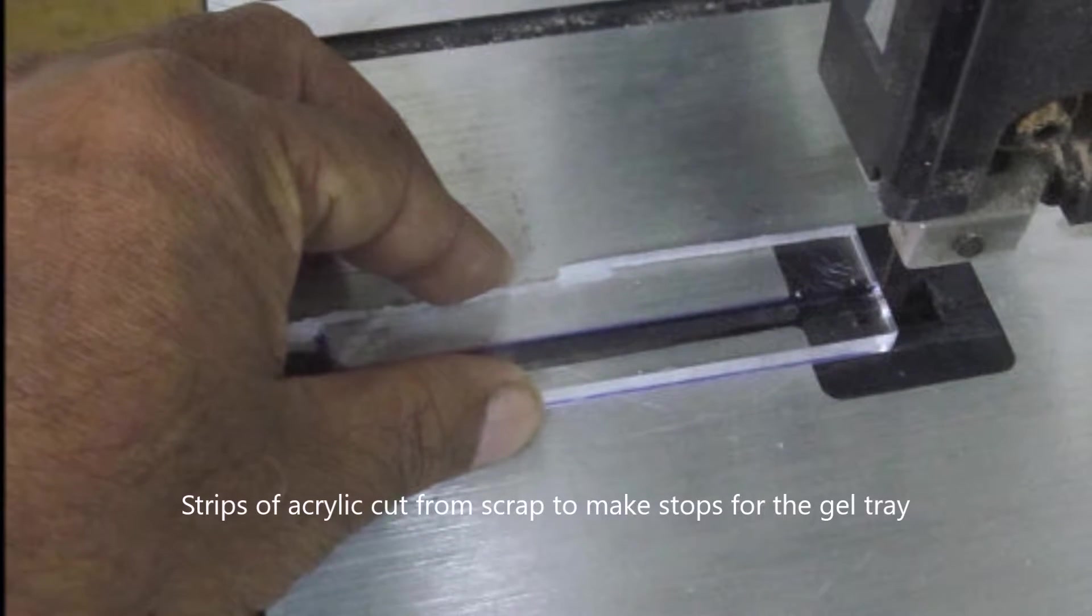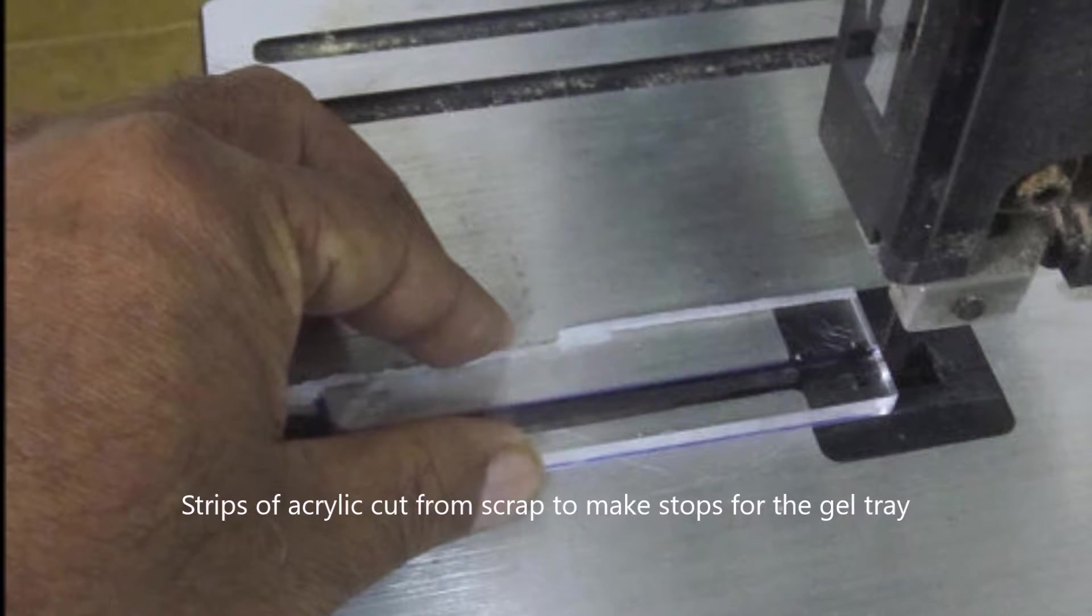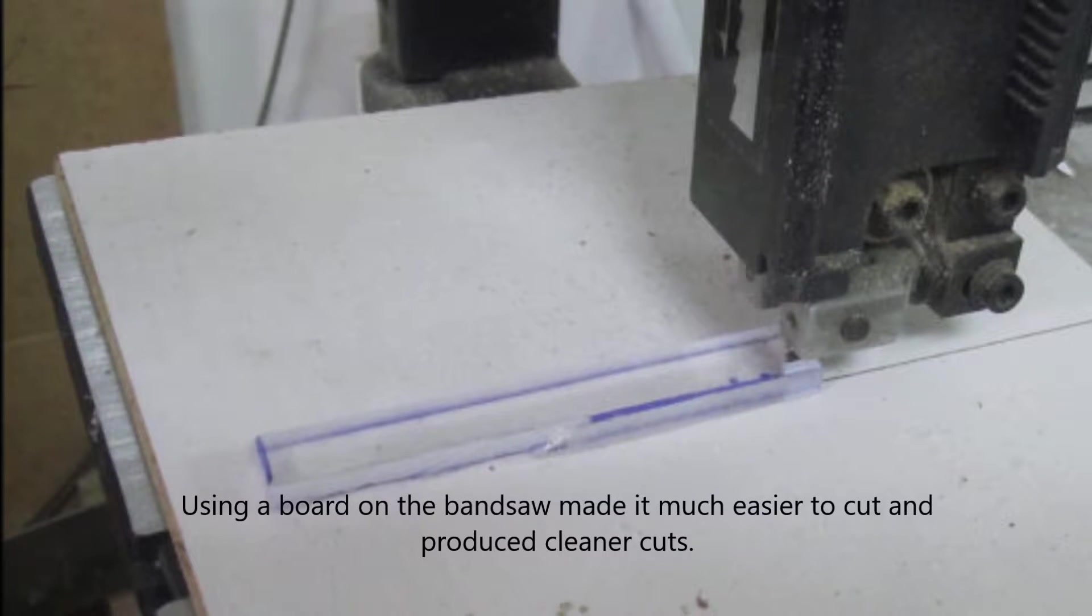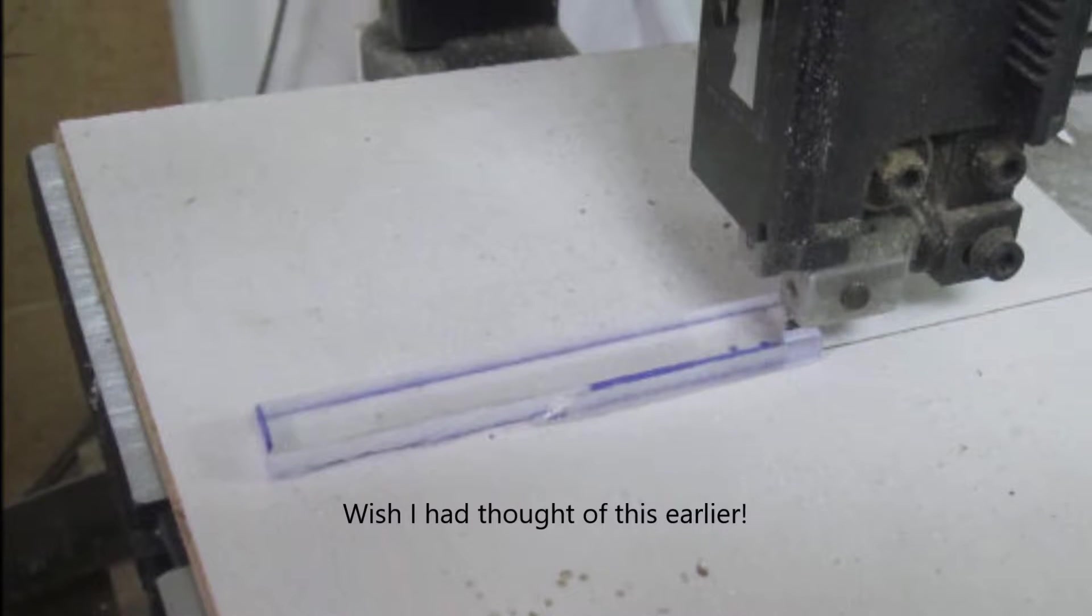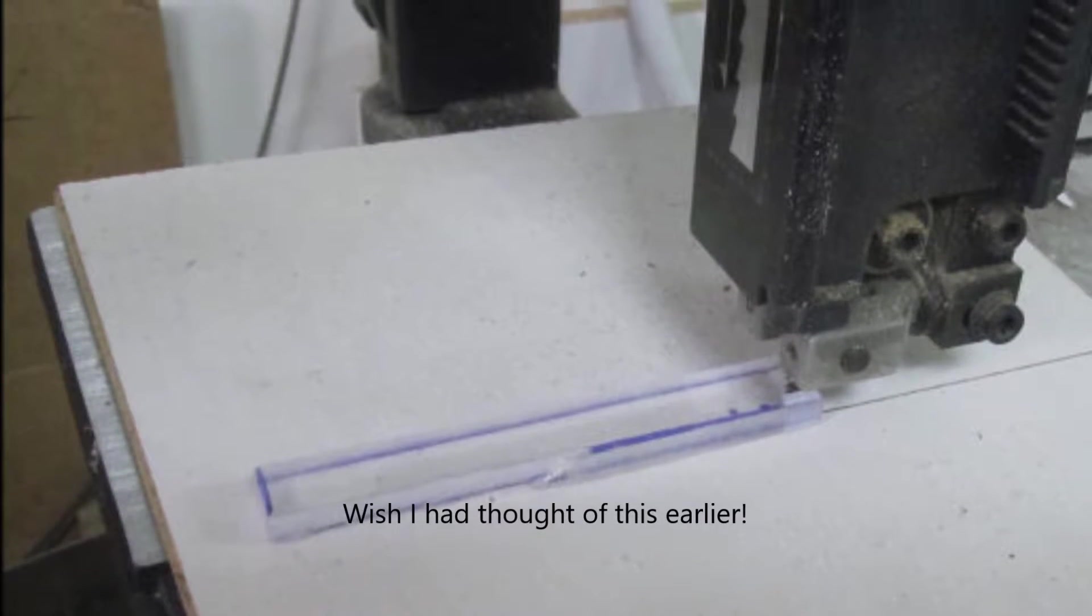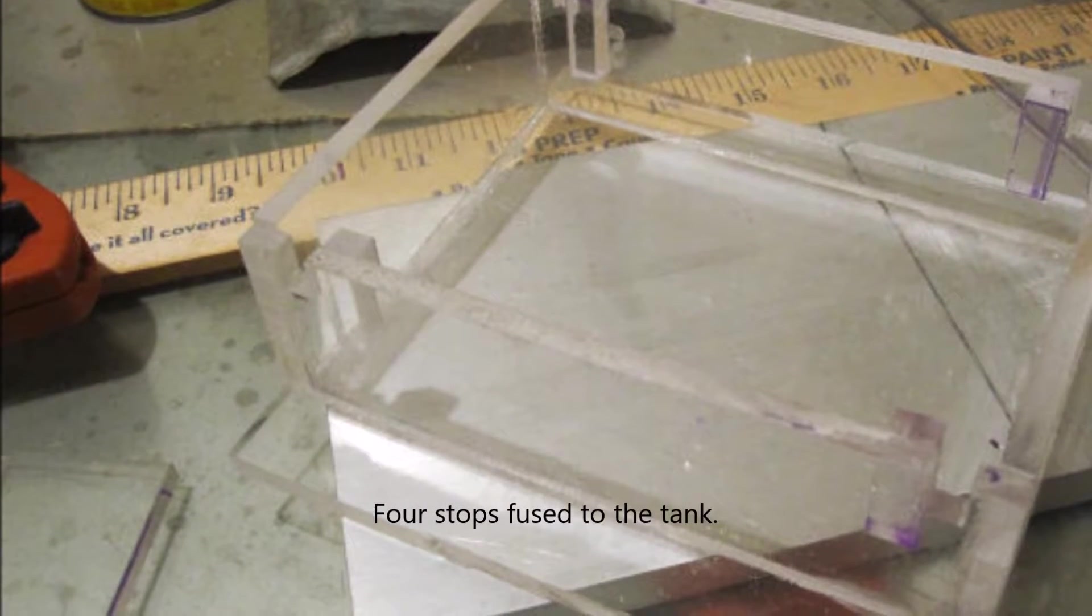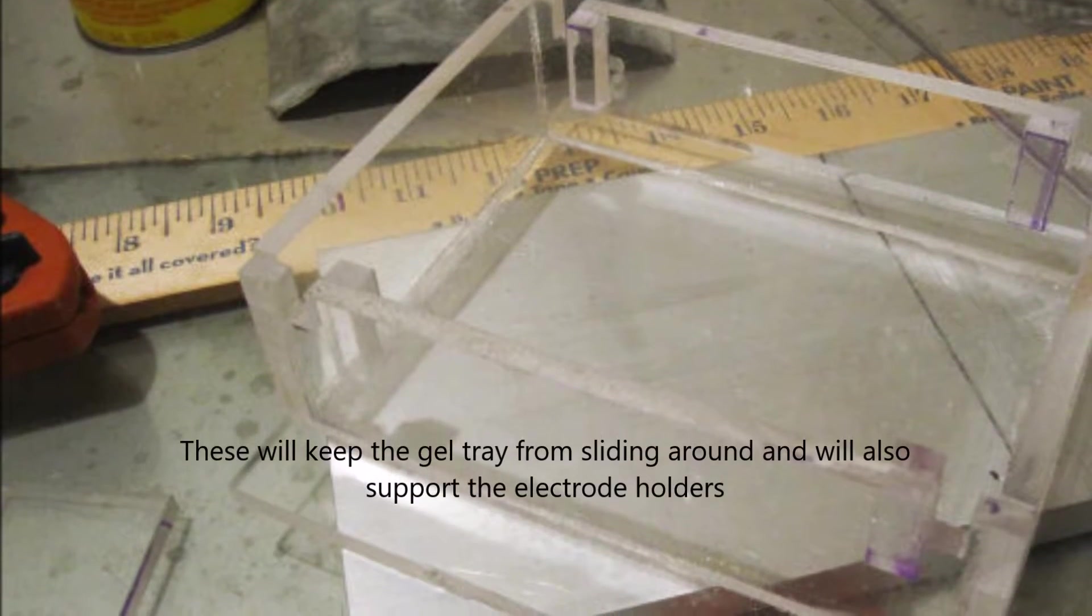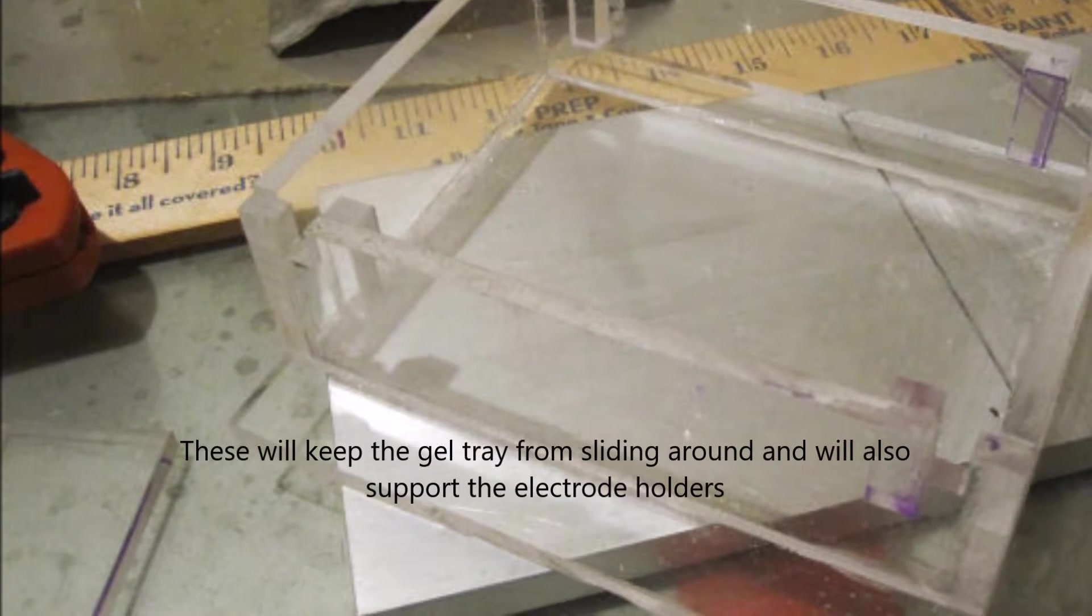And then the gel tray was sliding inside the gel box. So I put little vertical plastic scraps that would prevent the gel tray from sliding around. I used goof-off to glue the plastics together. Here you can see the vertical pieces that hold the gel tray and also support the electrode holders.